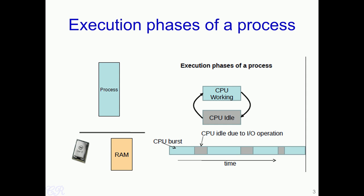Any program has been known to have two phases of execution. One is when it is actually executing instructions, which is known as a CPU burst, while the other is when it is blocked on an IO or not doing any operations — in this case the CPU is idle. Over time, a particular process would have some amount of CPU burst in which it would execute instructions on the processor, then some idle time waiting for an IO operation, then another burst of CPU time, and so on. There is always this interleaving between CPU burst and idle time.